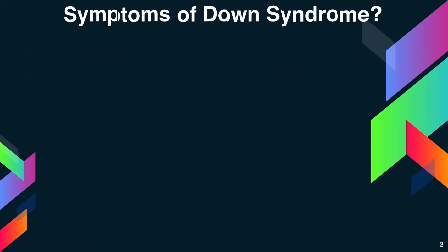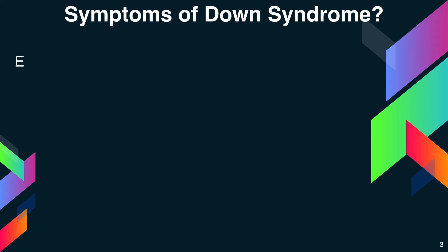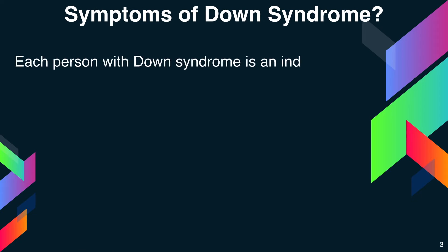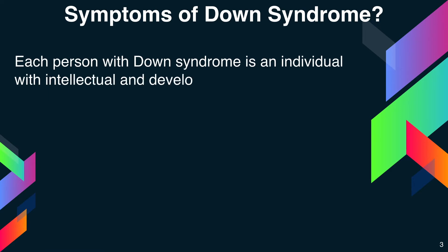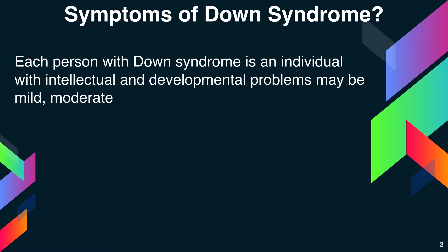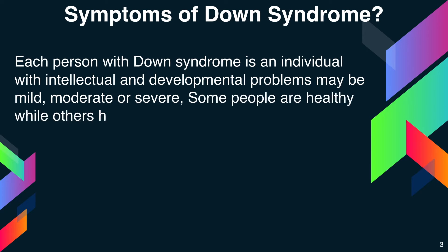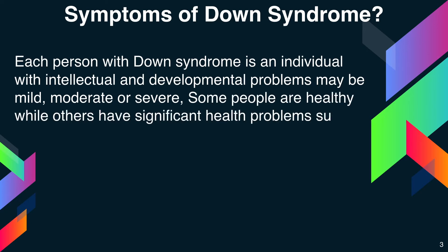What are the symptoms? Each person with Down syndrome has different symptoms. Intellectual and developmental problems may be mild, moderate, or severe. Some people are healthy while others have significant health problems such as serious heart defects.